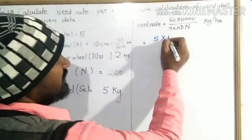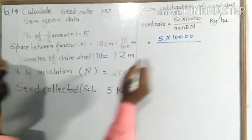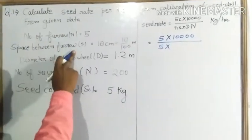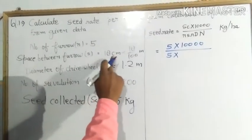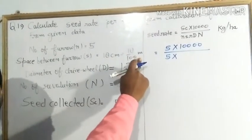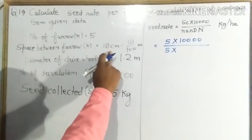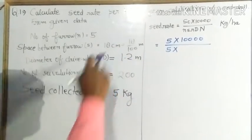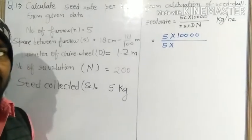And into 10,000 upon small n is equal to 5. And when we will put the value of small s, it will be converted into centimeter to meter. If this value of small s is given in meter then there is no conversion. So this value when in centimeter we will convert it into meter by dividing hundred.